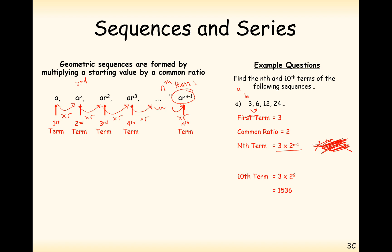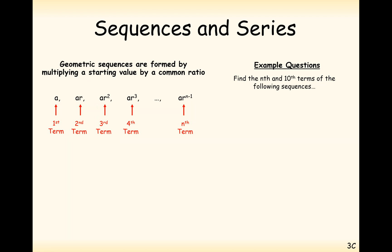So this is what you need to remember for geometric sequences: the nth term of a geometric sequence is written as A — the starting term — times R — the common ratio — to the power of n minus 1. It's always 1 less than the term that you're at.